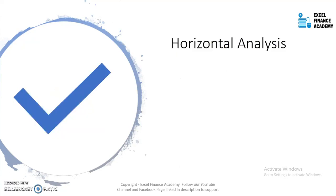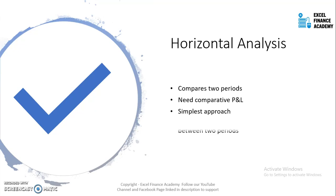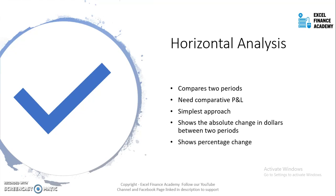What is horizontal analysis? Horizontal analysis is comparing two different periods — it means you need a comparative P&L. Comparative to the previous year, compared to the previous month, or comparing with the budget or other forecast. This is the simplest approach. It shows the absolute change in dollars between the two periods and also the percentage change. However, it is just giving an indication of how the revenue has changed compared to the previous year or budget, and doesn't give you deeper analysis yet.